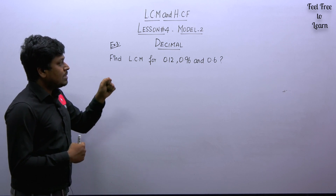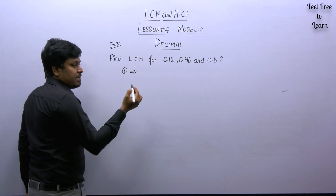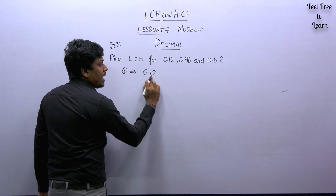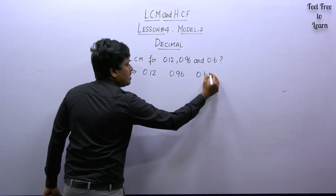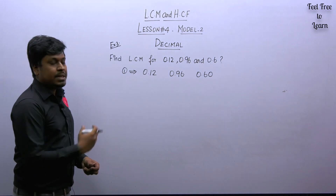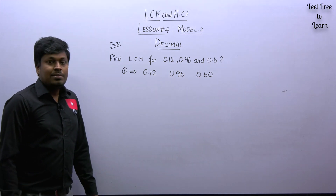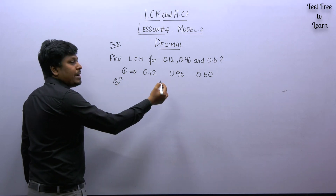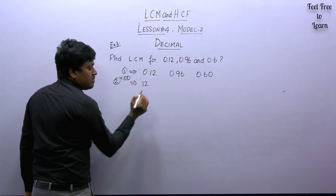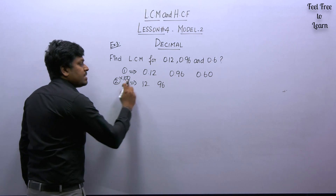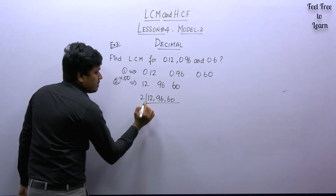Example question three: find LCM for 0.12, 0.96, and 0.6. Step one: make all numbers have equal decimal values. After the decimal point, 0.12 has two digits, 0.96 has two digits, but 0.6 has only one digit — so put a zero to make it 0.60. Now all three numbers have two decimal places. Step two: to remove the decimal points, multiply by 100. So 0.12 × 100 = 12, 0.96 × 100 = 96, and 0.60 × 100 = 60.